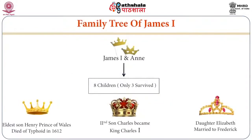Friends, on the screen there is a family tree of James the First. Annie, his wife, had eight children, of whom only three survived. The oldest son, Henry, Prince of Wales, died of typhoid in the year 1612. The second son Charles became King Charles I. His daughter Elizabeth married Frederick. These are very important events in the history of England.